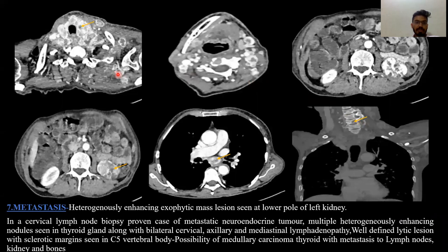Next case: Metastasis. There is a heterogeneously enhancing exophytic mass lesion seen at the lower pole of the left kidney. This is a cervical lymph node biopsy-proven case of metastatic neuroendocrine tumor, where multiple heterogeneously enhancing nodules are seen in the thyroid gland with bilateral cervical, axillary, and mediastinal lymphadenopathy. There is also a well-defined lytic lesion with sclerotic margins in the C5 vertebral body, suggesting medullary carcinoma thyroid with metastasis to lymph node, kidney, and bones.